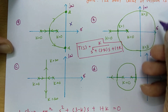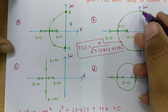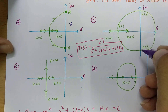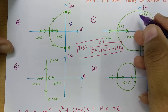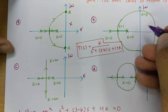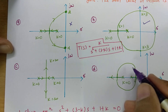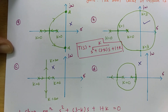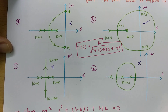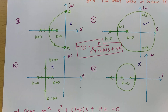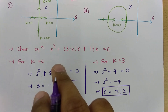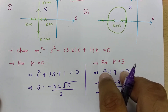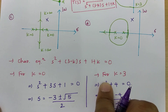At k equals 3, the root locus intersects the imaginary axis at plus or minus j2. One of the diagrams shows this intersection with the imaginary axis, while the others do not. The diagrams that do not intersect the imaginary axis at this point are incorrect. Based on this observation, we can identify which root locus diagram is correct.